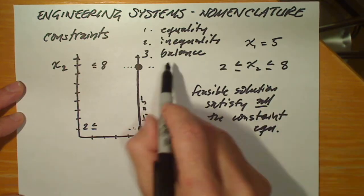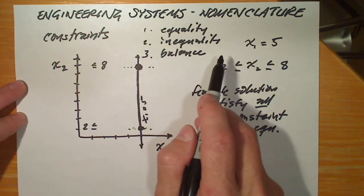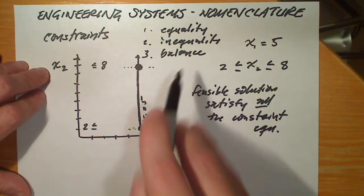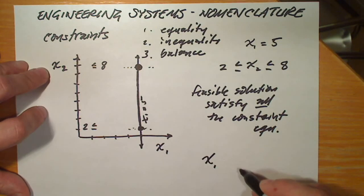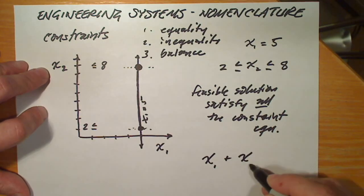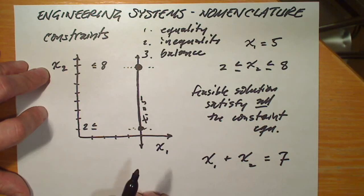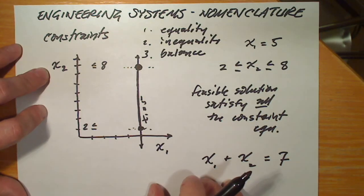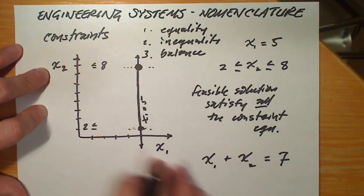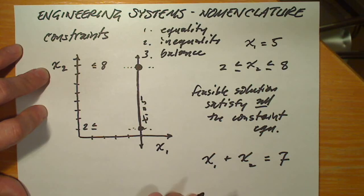Now let's consider this third, special type of balance constraint. We could also say, for example, that x1 plus x2 must equal 7. This narrows the problem further, because we can draw another line: x1 plus x2 equals 7. What would it look like?